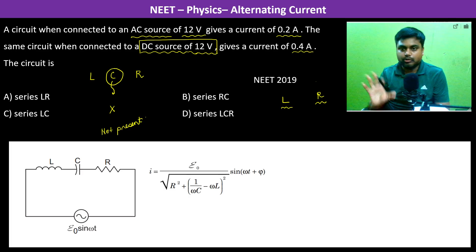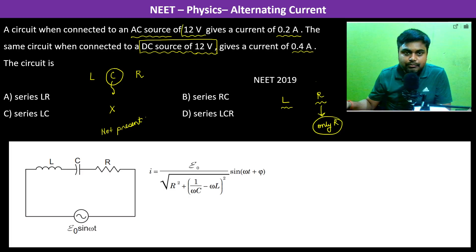If suppose there is only R, then with 12 volts AC and with 12 volts DC, it is going to give the same current. It is not like that. Therefore, that means that it is not R only.